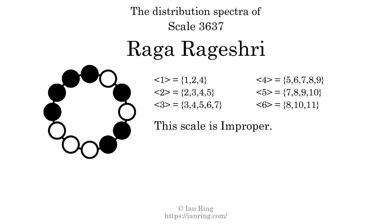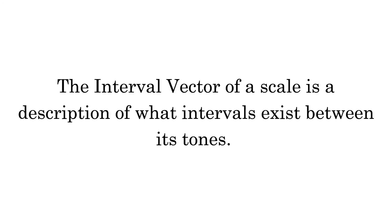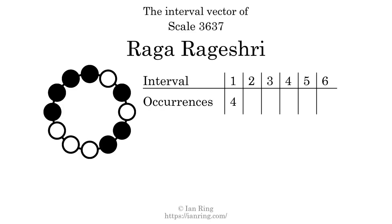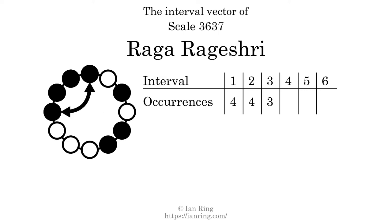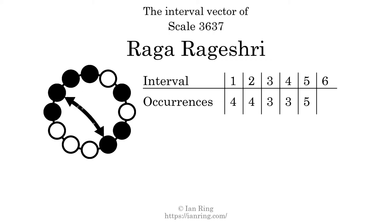Since the generic interval ranges overlap, this scale is an improper scale. The interval vector of a scale is a description of what intervals exist between its tones. There are 4 intervals with the size of 1 semitone, 4 intervals with the size of 2 semitones, 3 intervals with the size of 3 semitones, 3 intervals with the size of 4 semitones, 5 intervals with the size of 5 semitones, and 2 intervals with the size of 6 semitones.